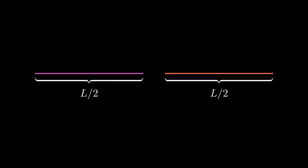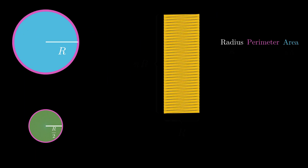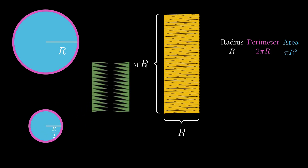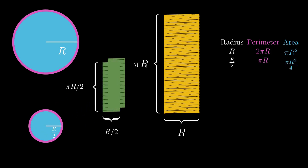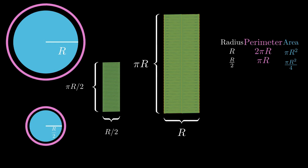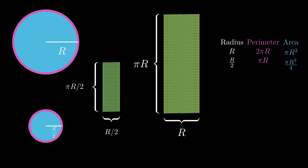Scaling a line by a factor of half, its corresponding property — its length — also scales by the same factor. On the other hand, bisecting the edge of a square or the radius of a disk would give us a new square or disk whose area is one-fourth that of the original shape. Even though the area reduced by a factor of four, the perimeter of these new smaller shapes has only reduced by a factor of two. So perimeter still scales by half even for a square or a disk.